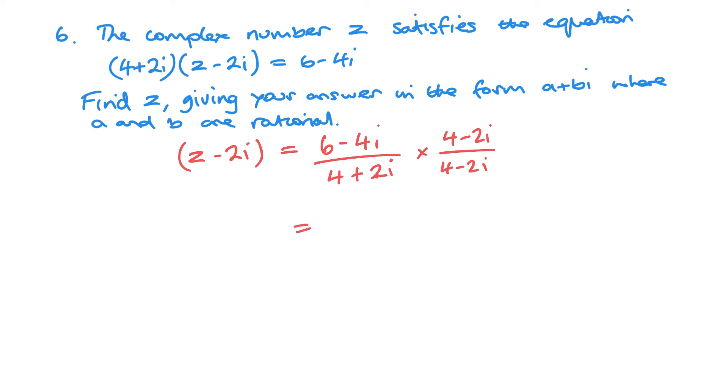So 6 times 4 is 24 minus 12i minus 16i plus 8i squared at the end. And then 4 times 4 is 16. And I've got negative 8i plus 8i will cancel out. And then I've got minus 4i squared at the bottom. So we've got on the top, we've got 24 for a real part. And we've got this here, which will be a minus 8 because of the i squared.